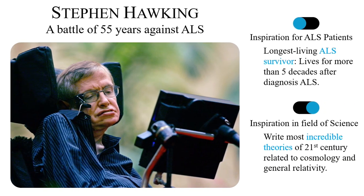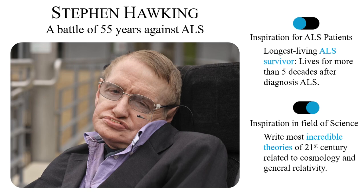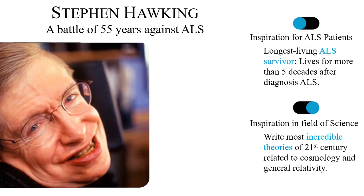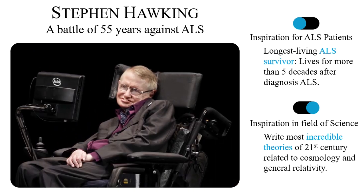The average life expectancy of a person with ALS is just 2 to 5 years. But here is legendary physicist Stephen Hawking, who lived for more than five decades after diagnosis and is the longest living ALS survivor. He is an inspiration for ALS patients and in the field of science, as ALS couldn't stop him from writing the most incredible theories of cosmology and general relativity while confined to a wheelchair.